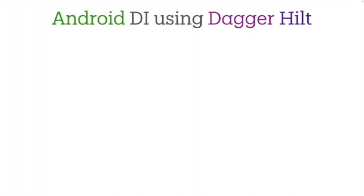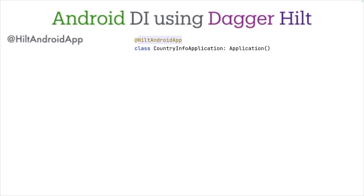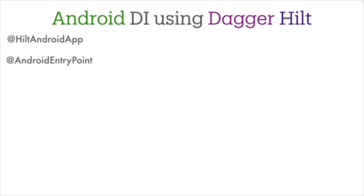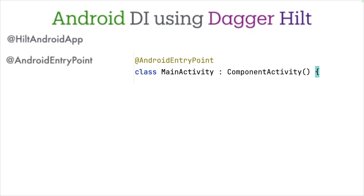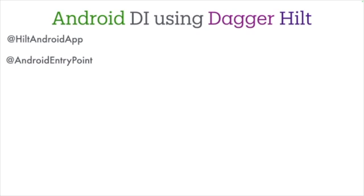The Dagger and Hilt tutorial started by introducing you to the @HiltAndroidApp annotation. This annotation on our application class is the gateway — it initializes Hilt so the framework can handle all the dependency injection across the entire app. And then we used @AndroidEntryPoint on our main activity to inject dependencies directly. Any Android-specific class like an activity, fragment, or service can be annotated with @AndroidEntryPoint.